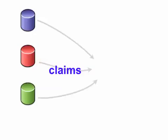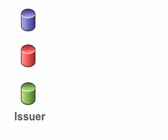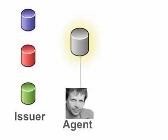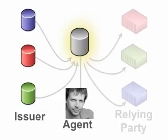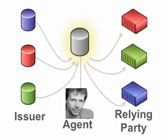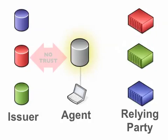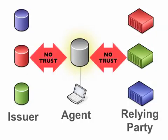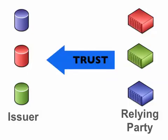In this model, we have claims that represent aspects about the user that come from a variety of different places, and they can take those claims and present them to a site whenever they want to. The claims come from an issuer. There's an agent representing the user. The agent can take the claims from the issuer and then present those claims to a site or relying party whenever the user wishes. In this architecture, no trust is required between the agent and the issuer or between the agent and the relying party. There is trust between the relying party and the issuer, but notice this is an asymmetric relationship — the issuer may have no knowledge of the relying party.